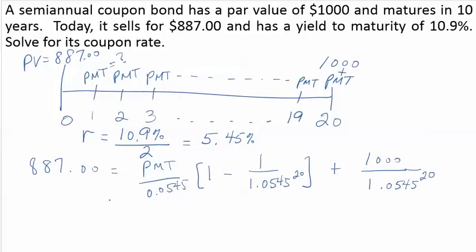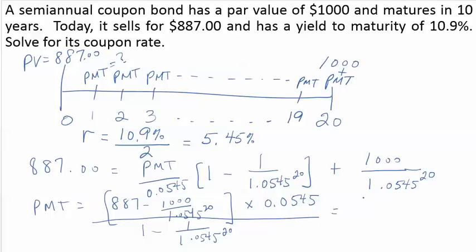And then we have to do some amount of algebra here to solve for payment. If I were to just rearrange that, it would look like this. We get $45.08. I'm going to save a few more digits here because I'm not done.